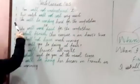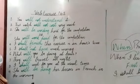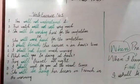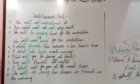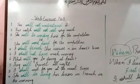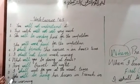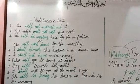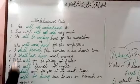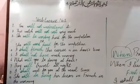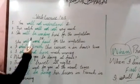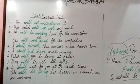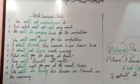The next sentence is: 'She will be working hard for the competition.' This uses future continuous tense. The sentence 'she will be working hard for the competition' is correct in future continuous tense. Both sentences — simple future and future continuous forms — can be considered correct in context.